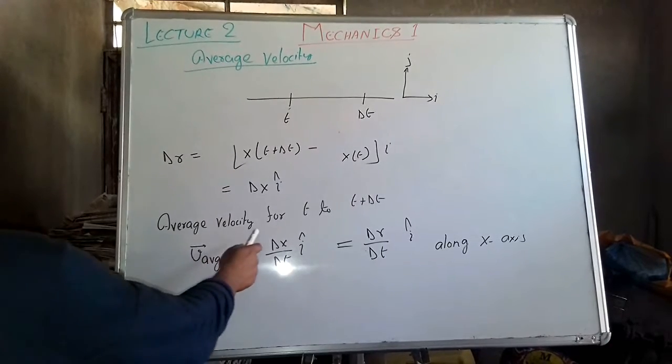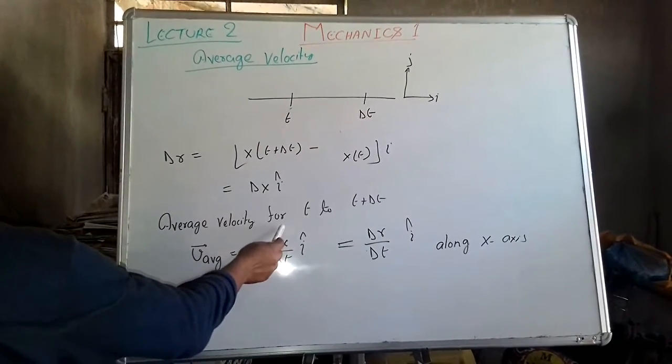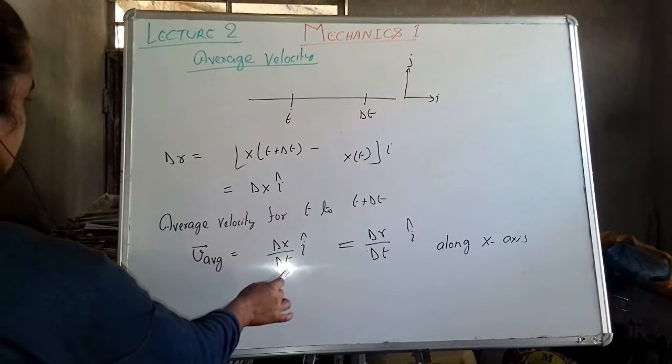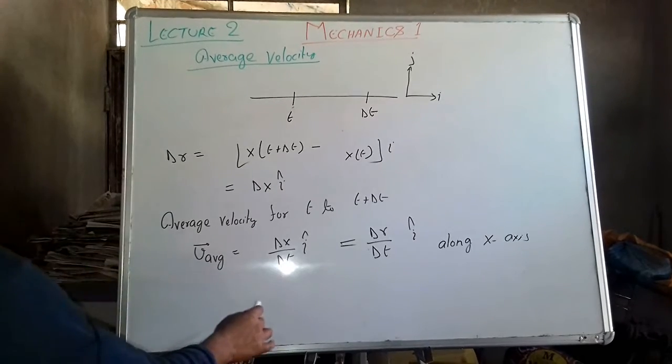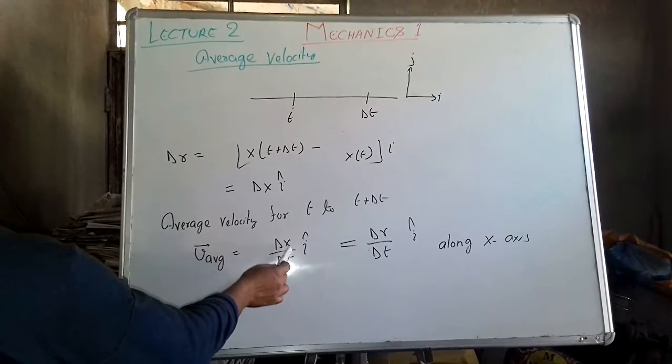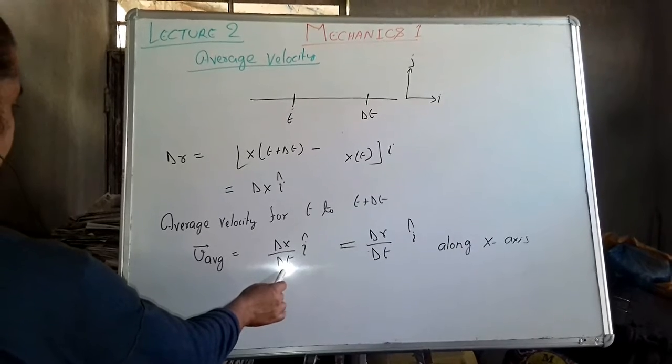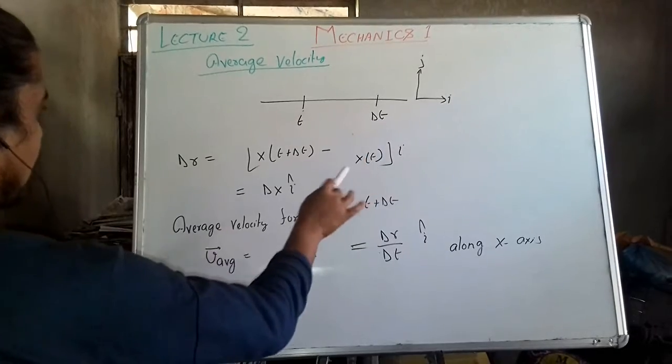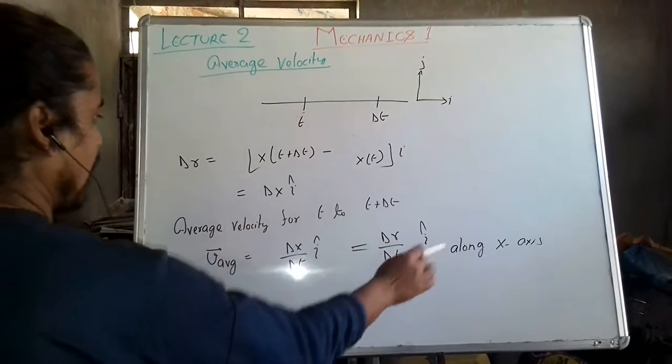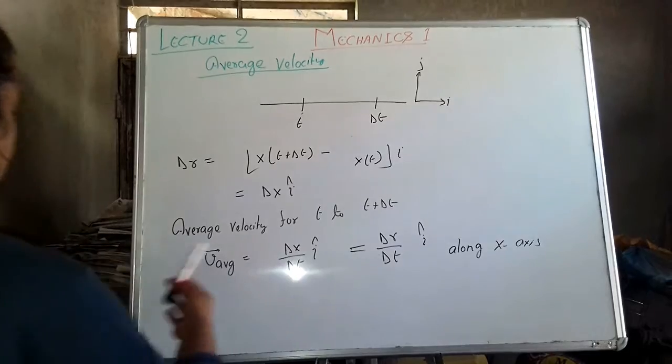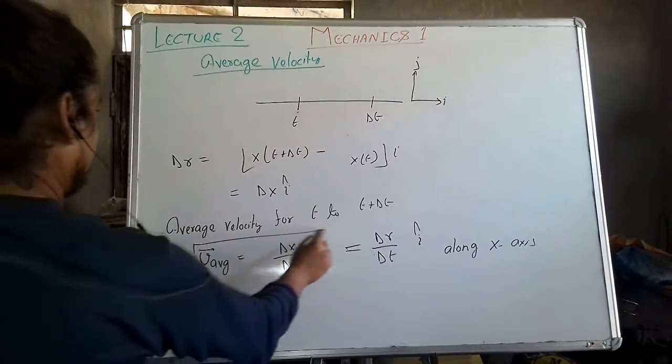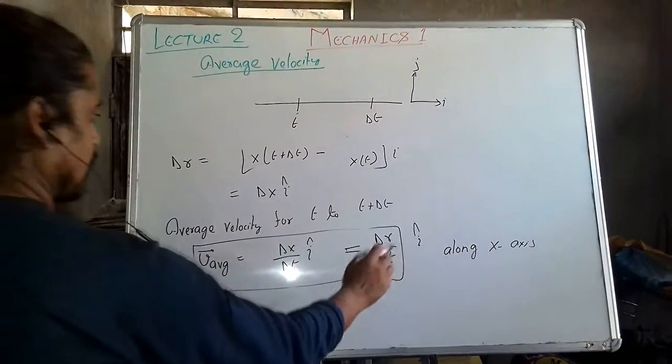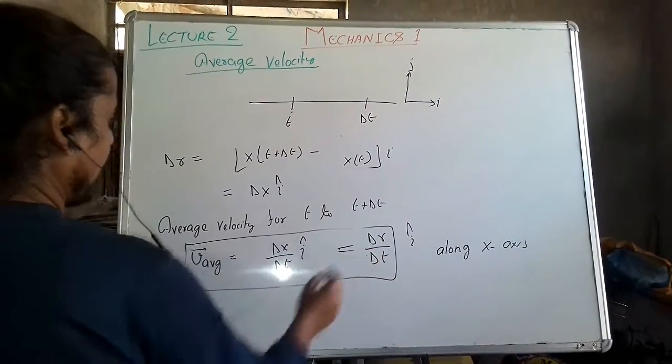Average velocity is nothing but the position vector divided by incremental time delta t. So V average is delta x divided by delta t, i hat, where i hat means in the x direction, along the x axis. This gives us delta r divided by delta t.